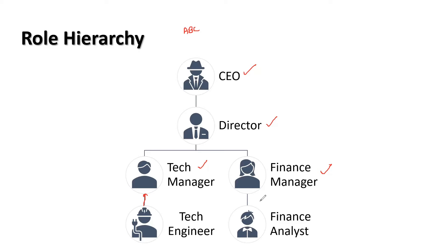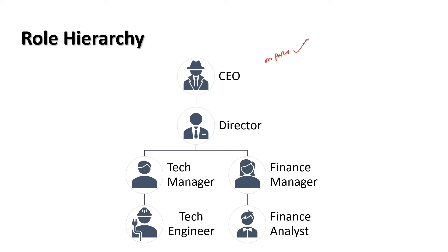Same is the case with the other side. We have the finance manager, and under the finance manager we have finance analyst. People in that category of finance analyst would be assigned that role, with a few people reporting to this finance manager depending on the ABC organization's company size. On paper this role hierarchy looks good: technician engineer reports to tech manager, tech manager reports to director, director reports to CEO. From the right hand side, finance analyst reports to finance manager, finance manager reports to director, director reports to CEO.